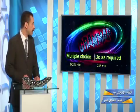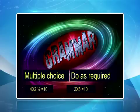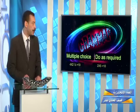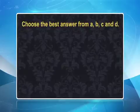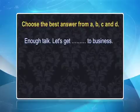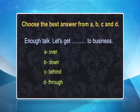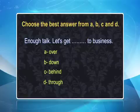Let's move to the next section in your exam paper: grammar. In grammar you have two sections — one multiple choice and the other do as required, that is some transformations. The first question says: enough talk, let's get blank to business. The choices are over, down, behind, through. These are what we call phrasal verbs. One is telling the other: stop talking, let's go to business — that is, start doing something. So it's get down. Let's get down to business — that is, start doing something seriously.